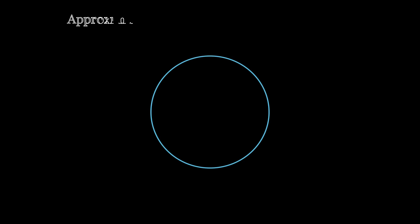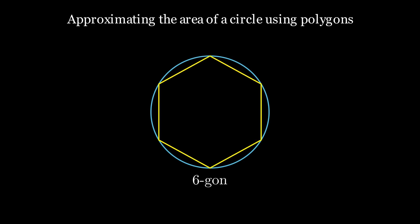Consider a circle. Archimedes was interested to find the area of this circle. He thought that a hexagon is a good approximation of a circle. As you can see,